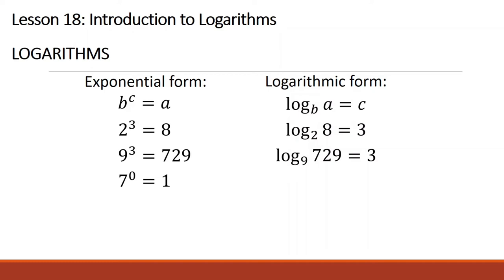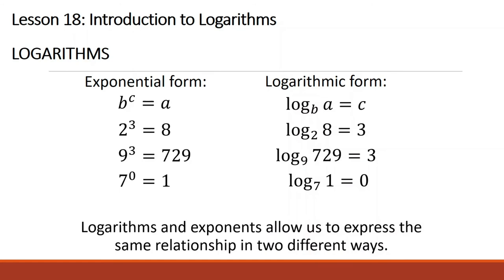Next, 7 raised to 0 is equal to 1. In logarithmic form, this would be logarithm of 1 base 7 is equal to 0. Logarithms and exponents allow us to express the same relationship in two different ways.